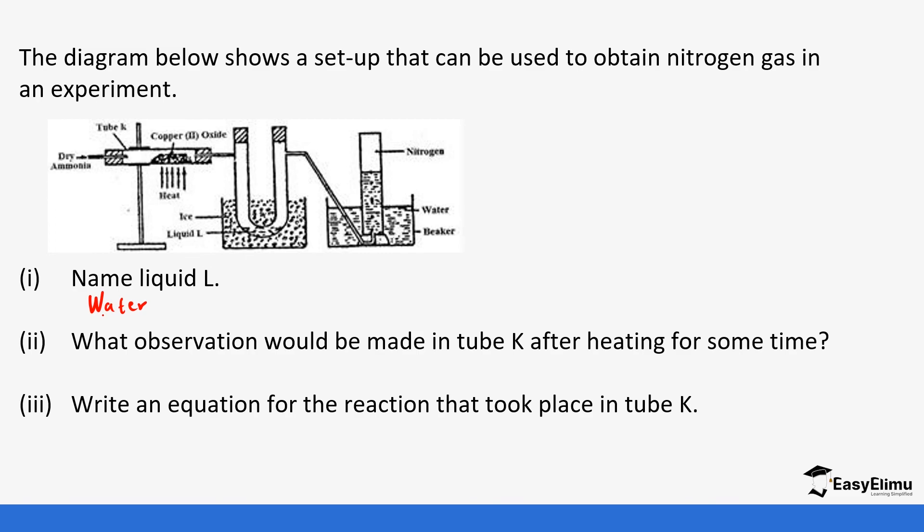What observation would be made in tube K after heating for some time? First, the black copper oxide turns brown. That is one of the observations. Write an equation for the reaction that took place in tube K. So we have ammonia that reacts with copper oxide to form copper solid plus nitrogen gas plus water. We ensure that our equation is balanced. So it becomes we put a 3 here, put a 3 here, put a 2 here, we put a 3 here. That balances the equation.